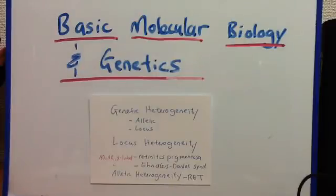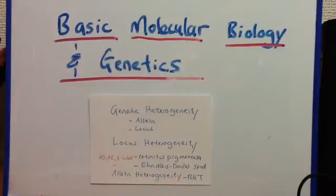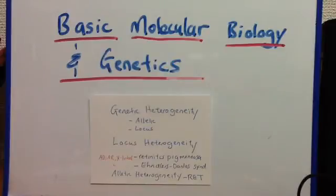An example of allelic heterogeneity is the RET gene, which encodes the receptor tyrosine kinase. Some mutations in this gene cause dominantly inherited failure of development of colonic ganglia, leading to defective colonic motility and severe chronic constipation, known as Hirschsprung disease.